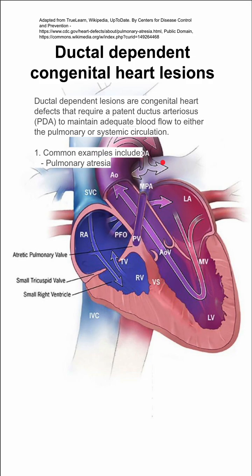Here are some examples. Pulmonary atresia, which is shown here in the background — you can see the atretic pulmonary valve, and the right side of the heart is much smaller than the left side. In this case, you're relying on the left side of the heart to pump blood both in the systemic circulation as usual, but also on that PDA to get that pumped blood into the pulmonary circulation.